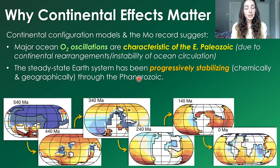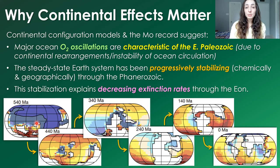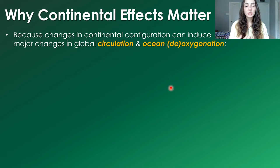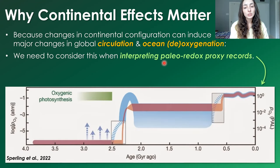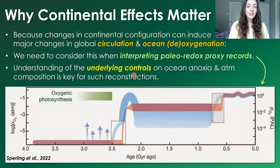Therefore, it's important to note that early Paleozoic atmospheric oxygen may not have been much lower than modern levels — it wasn't necessarily continued low oxygen that caused these anoxic swings, but rather continental rearrangement. Continental configuration models and the molybdenum record — one of the most well-established and globally representative paleo-redox proxies — suggest that major oscillations in ocean oxygen concentrations are characteristic of the early Paleozoic due to continental rearrangement and subsequent ocean circulation instability. The steady-state Earth system has been progressively stabilizing, chemically and geographically, throughout the Phanerozoic from 540 million years ago to today, which would also explain the decreasing extinction rates throughout the eon.